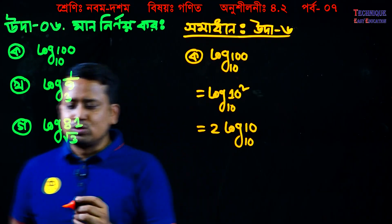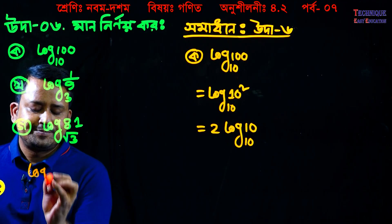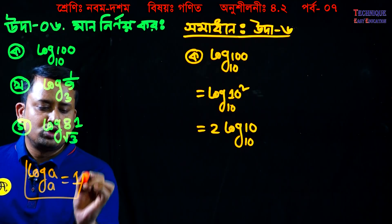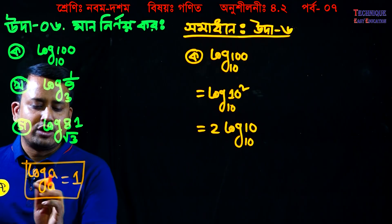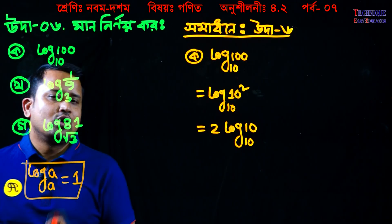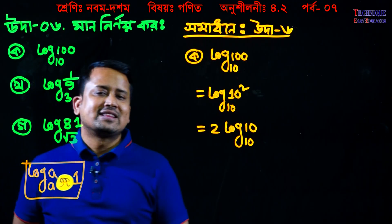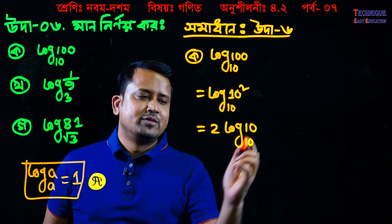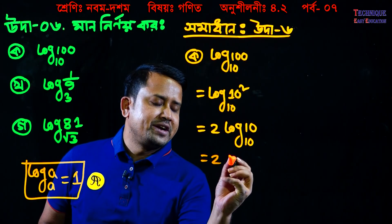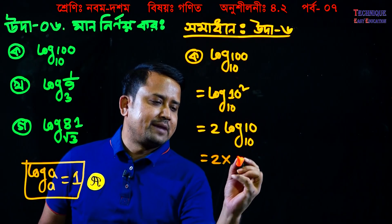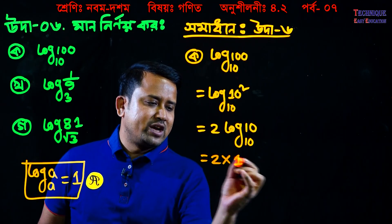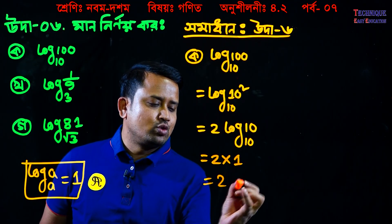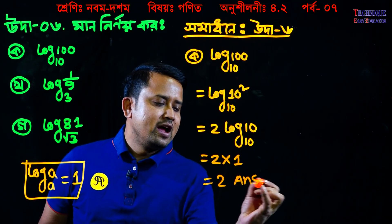Now, look, we have log a base a equals 1. The other one is the same — log a base a equals 1. Log 10 base 10 is the same, the other one is the same. That's 2 times 1, which equals 2. So this is the answer.